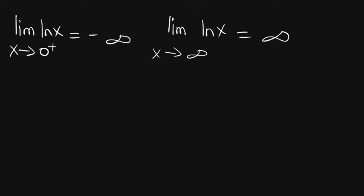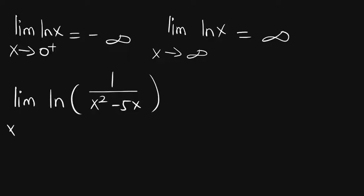Now let's look at the first example. We have to find the limit of the natural log of 1 over (x² minus 5x) as x approaches minus infinity. You might wonder why I said we can't put minus infinity into the natural log function, since we're approaching minus infinity. Let's look at something here.